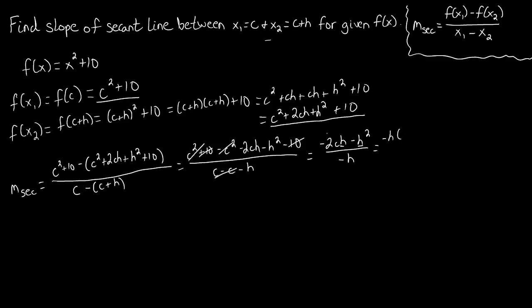If we factor out a negative h out of this first term, we're left with 2c. And out of the last term, we're left with plus h.